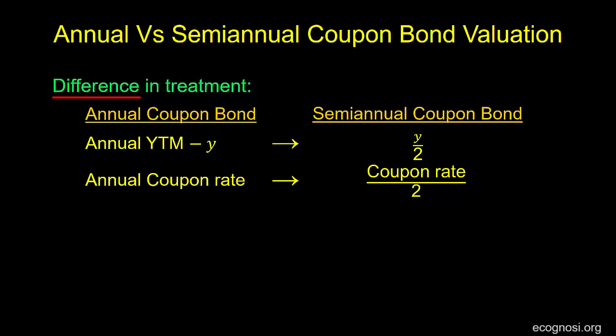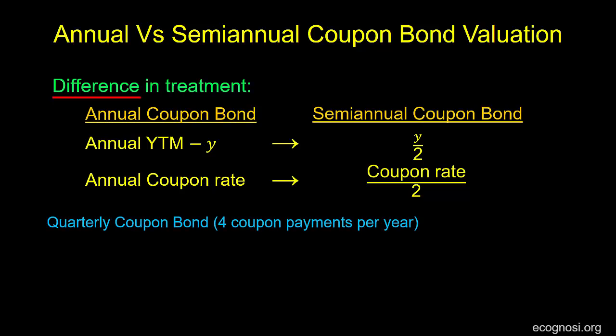And to extend the analysis a bit further, if we had a quarterly coupon bond — that is, a bond making coupon payments once every quarter of a year, which is equivalent to once every 3 months — as we have 4 three-month periods within a given year, the periodicity would equal 4. In that case, we'd have to divide the yield to maturity and the coupon rate by 4.